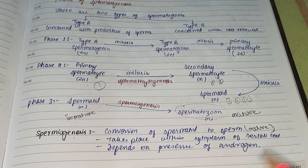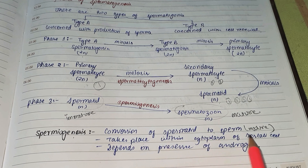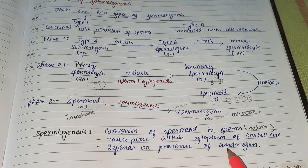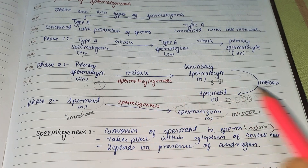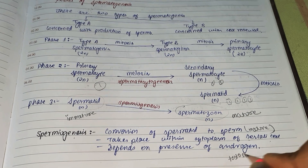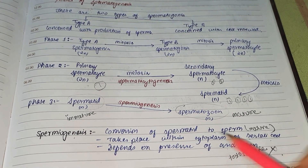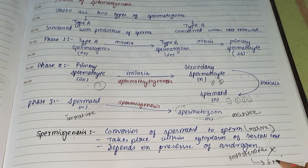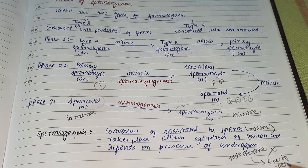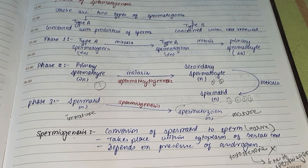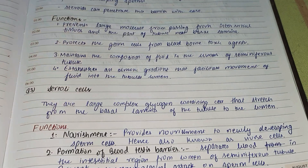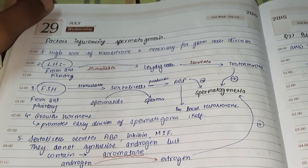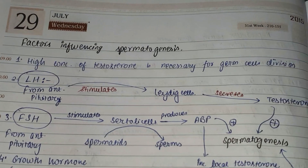Spermiogenesis takes place within the cytoplasm of Sertoli cells. It depends on the presence of androgens. For example, if testosterone is absent, spermiogenesis will not occur, leading to the absence of spermatogenesis.